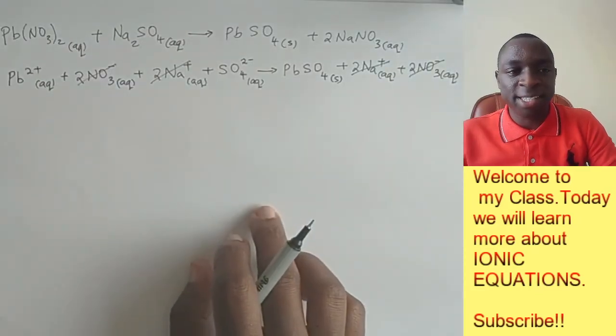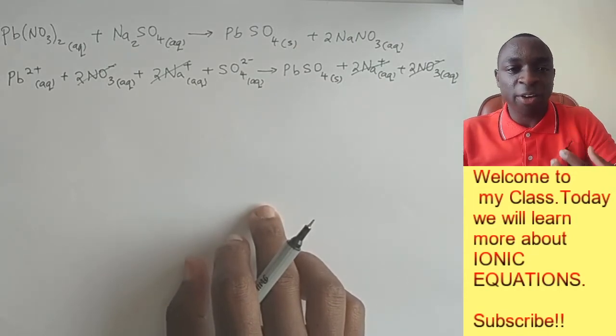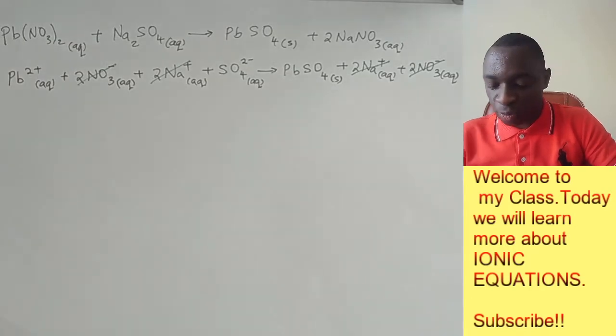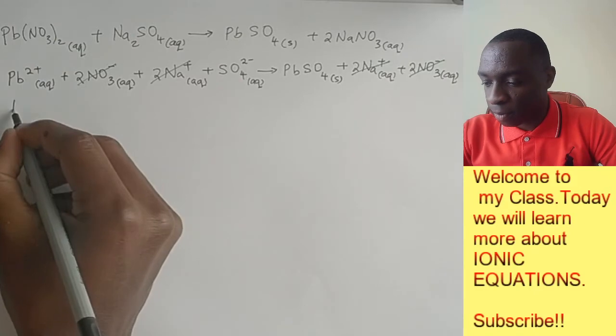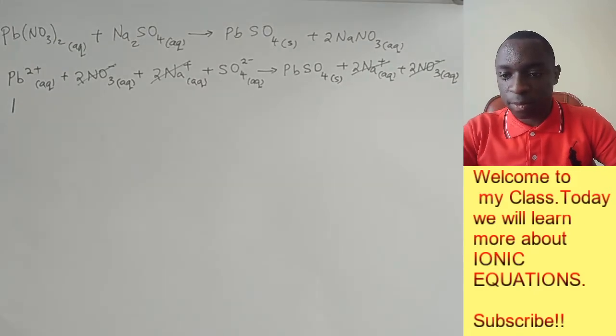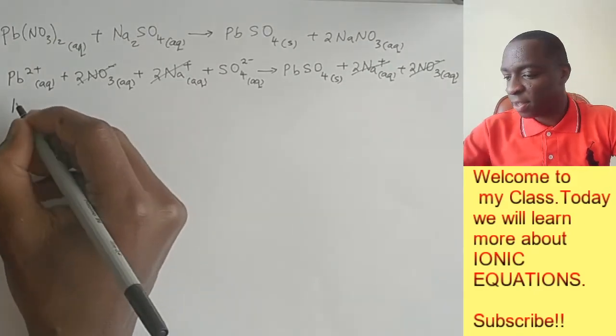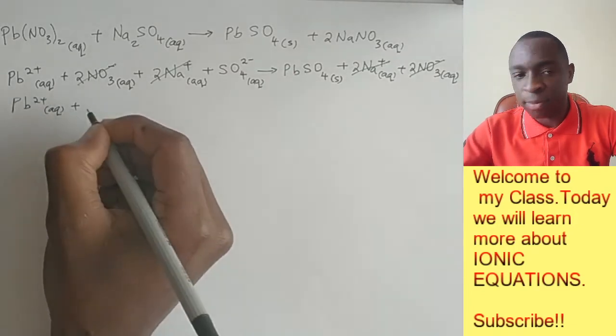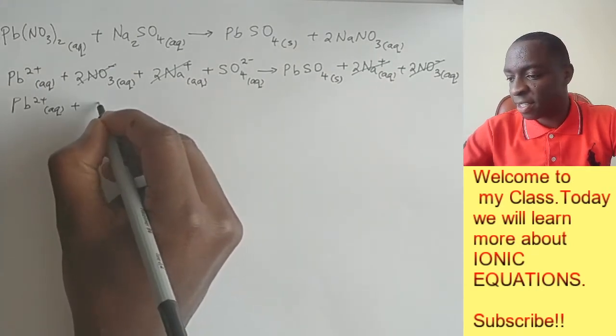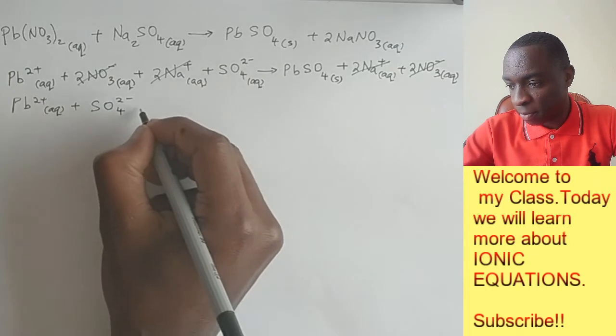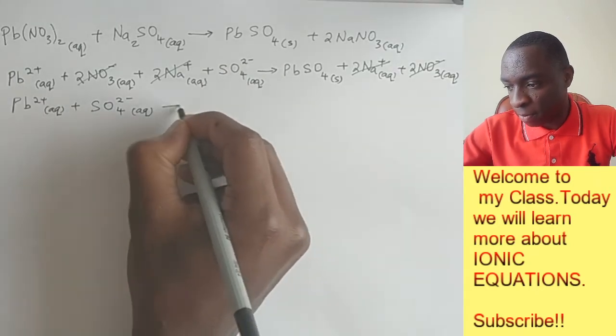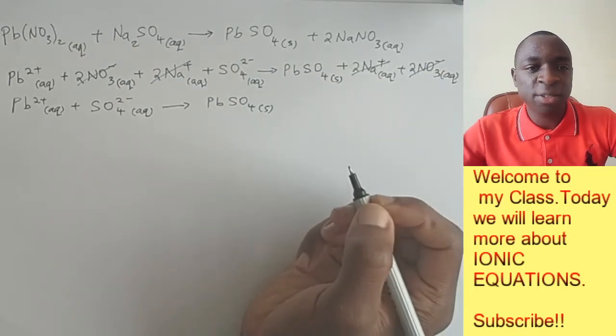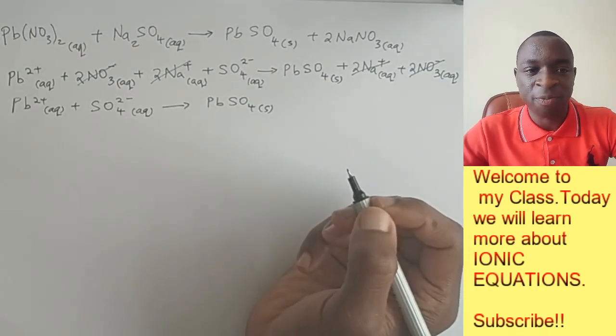So whatever remains is our ionic equation. You just write it without the spectator ions that you crossed out. And that is going to be like this. So you see, you have lead ions. And of course, you didn't cross out the sulfate. And that one forms your ionic equation. It is as simple as that.